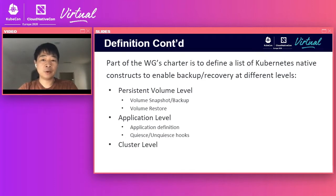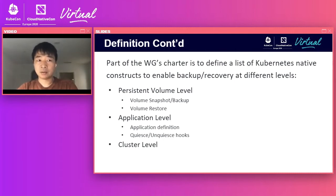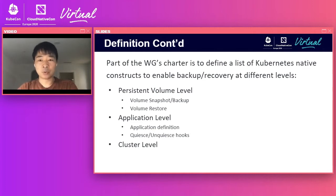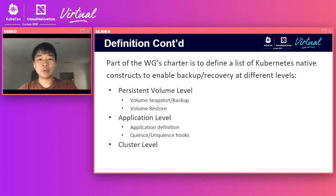At the application level, we need building blocks to first group API resources that belong to an application, defining all the API resources that construct that particular application. We also need quiesce and unquiesce hooks, which can tell a specific application to temporarily freeze itself to achieve application consistency for snapshot and backup, and unfreeze afterwards. This is particularly important for applications that cache writes in RAM — a quiesce hook allows them to flush writes to the persistent layer before a volume snapshot is taken. For stateful workloads, we also need volume snapshots and volume backup. At the cluster level, we need all of the above.